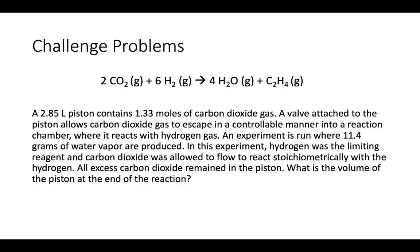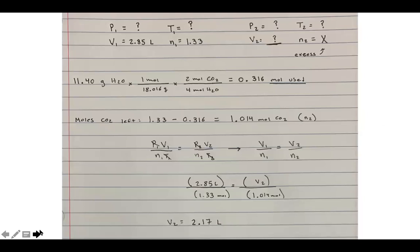So what they're saying is that you formed 11.4 grams of water, hydrogen was our limiting reactant, and only enough CO2 to completely react with that hydrogen was released from the piston. So we have P1, V1, T1, and N1, and then also P2, T2, V2, and N2.